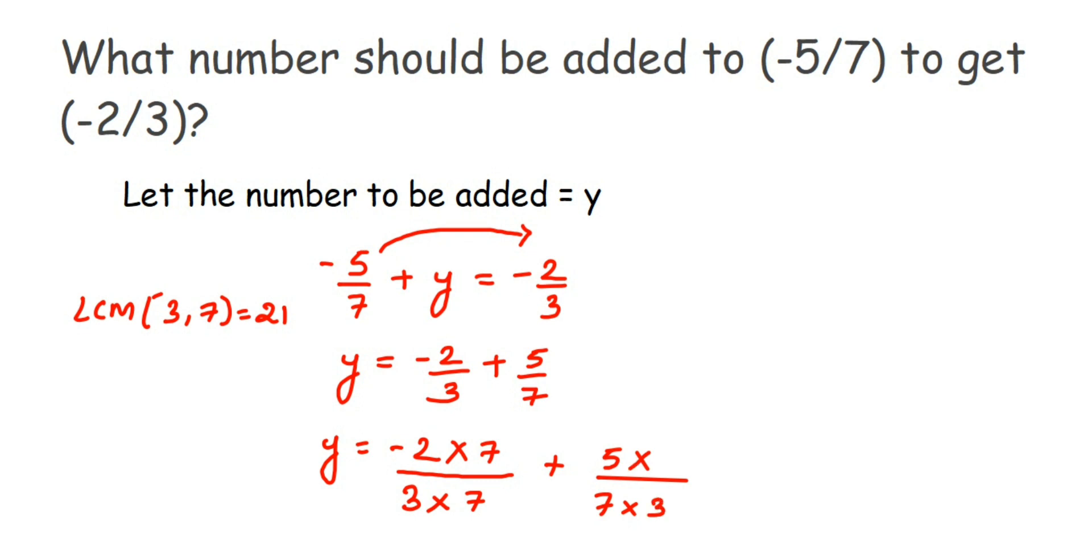So y = -2 × 7 = -14, which gives us -14/21. Plus, 5 × 3 = 15, giving us 15/21. Now the denominators are the same, so we just add the numerators.